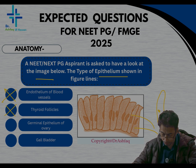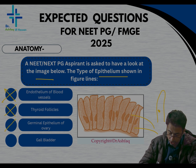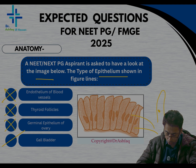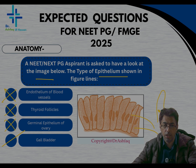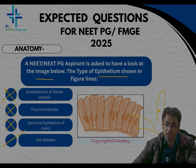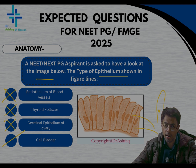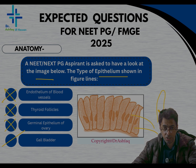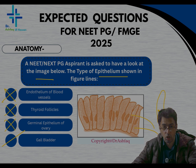The germinal epithelium of the ovary is also not an option, as I just mentioned. As far as the gallbladder is concerned, it is a part of the gastrointestinal tract and its histology is characterized by a highly folded mucosa. Along that mucosa, you have columnar epithelium — specifically tall columnar epithelium. So characteristically, the feature of the gallbladder is the tall columnar epithelium.